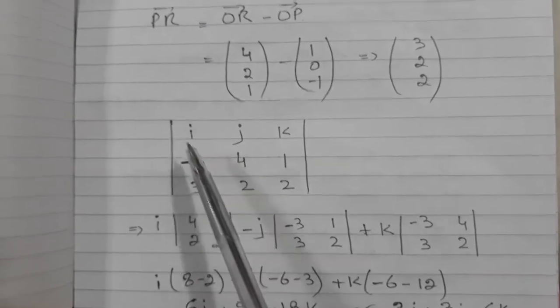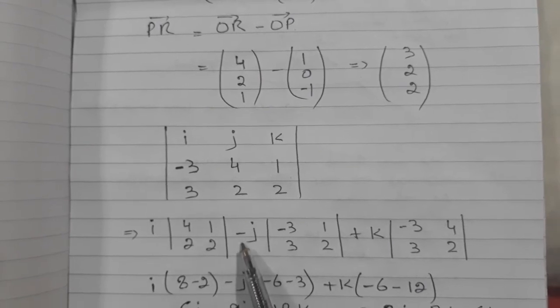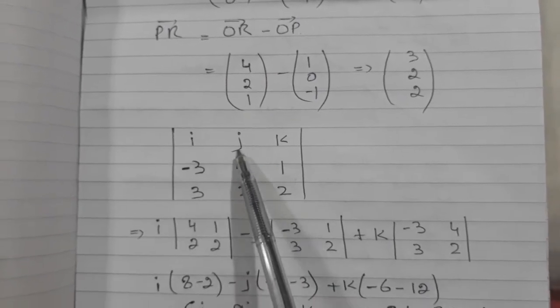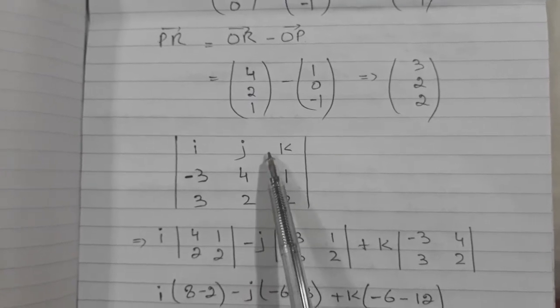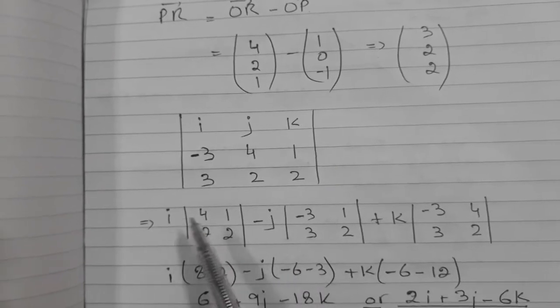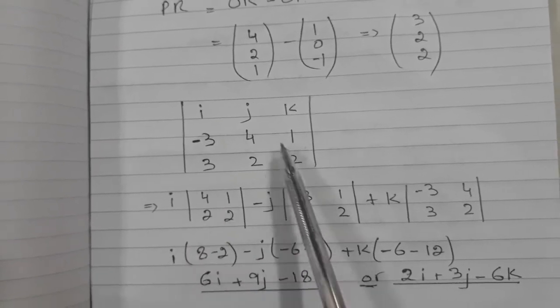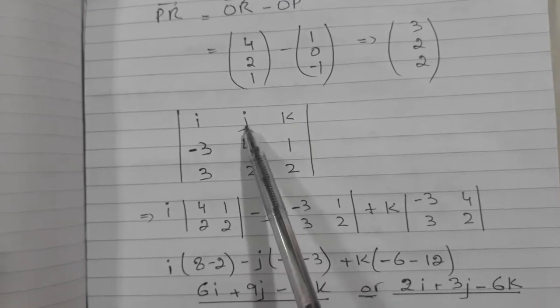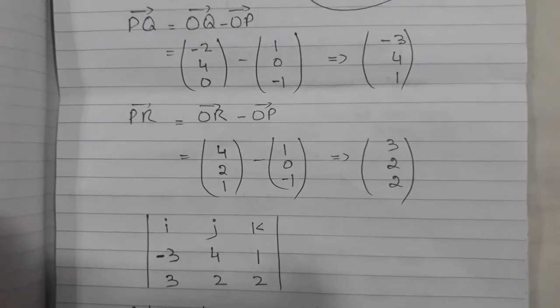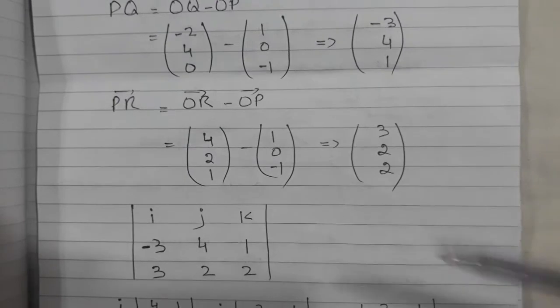When we take i, we forget these two numbers and take these four which I have written here. Then I take minus j. Okay, always remember this is plus, minus, plus. Why we will not study the answer of this concept right now. So i is 4, 1 and 2, 2 from here. For j, sorry for the interruption, it was due to electricity failure. So anyway, let us continue from here.